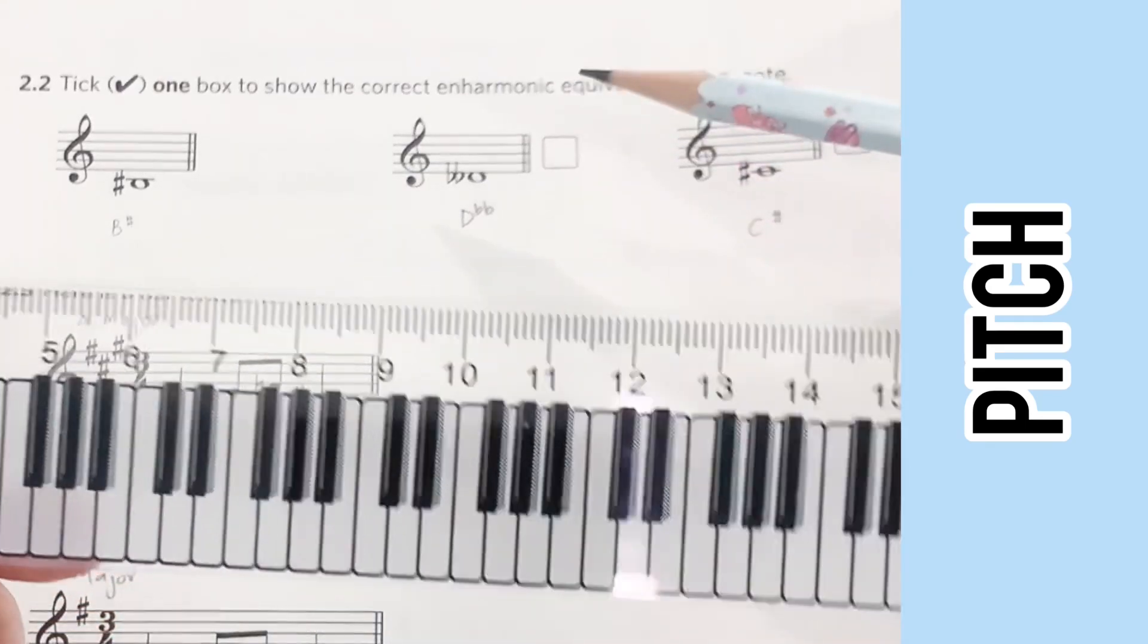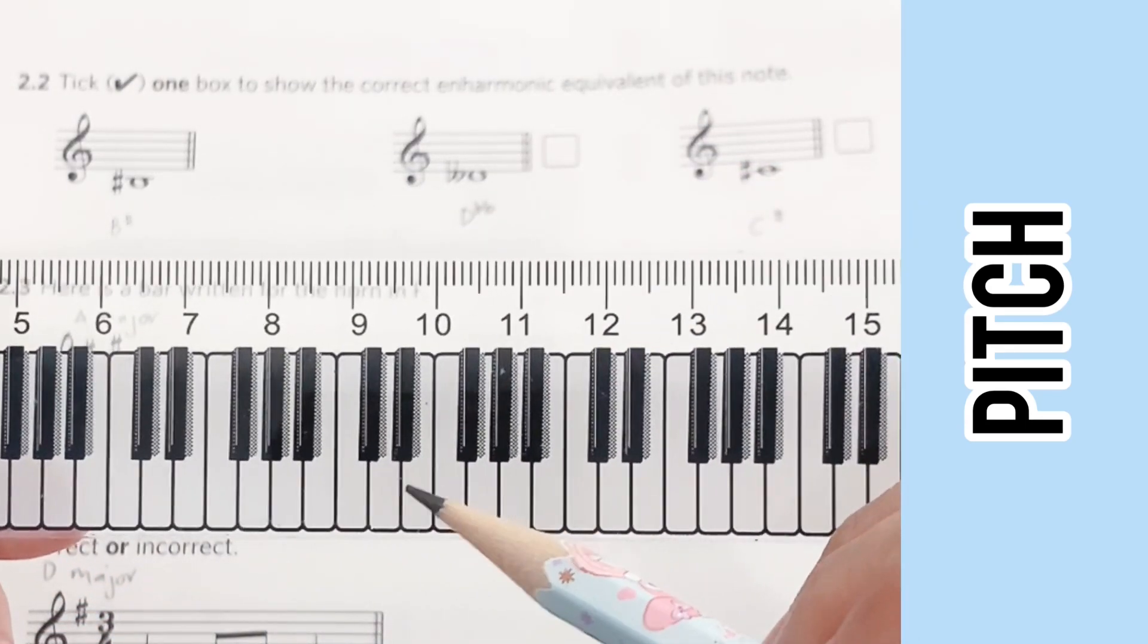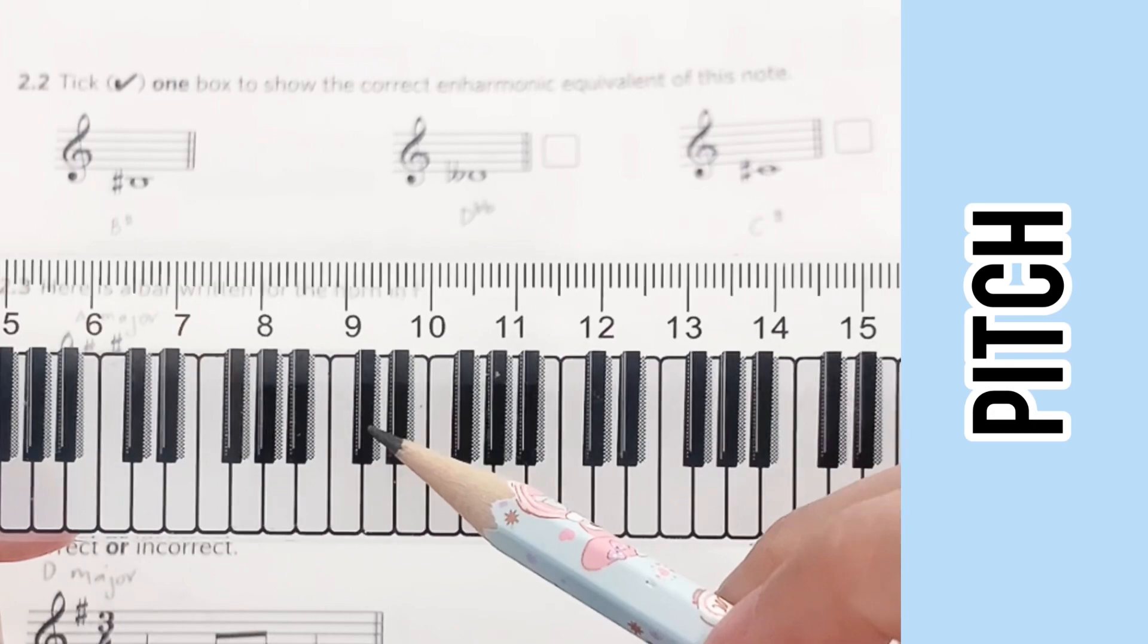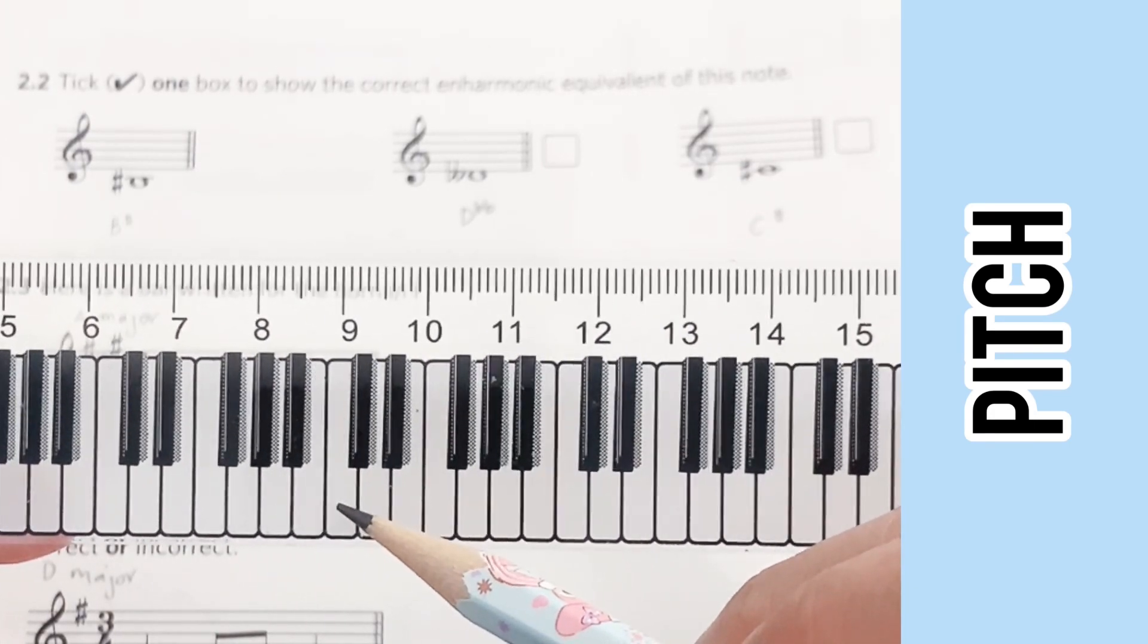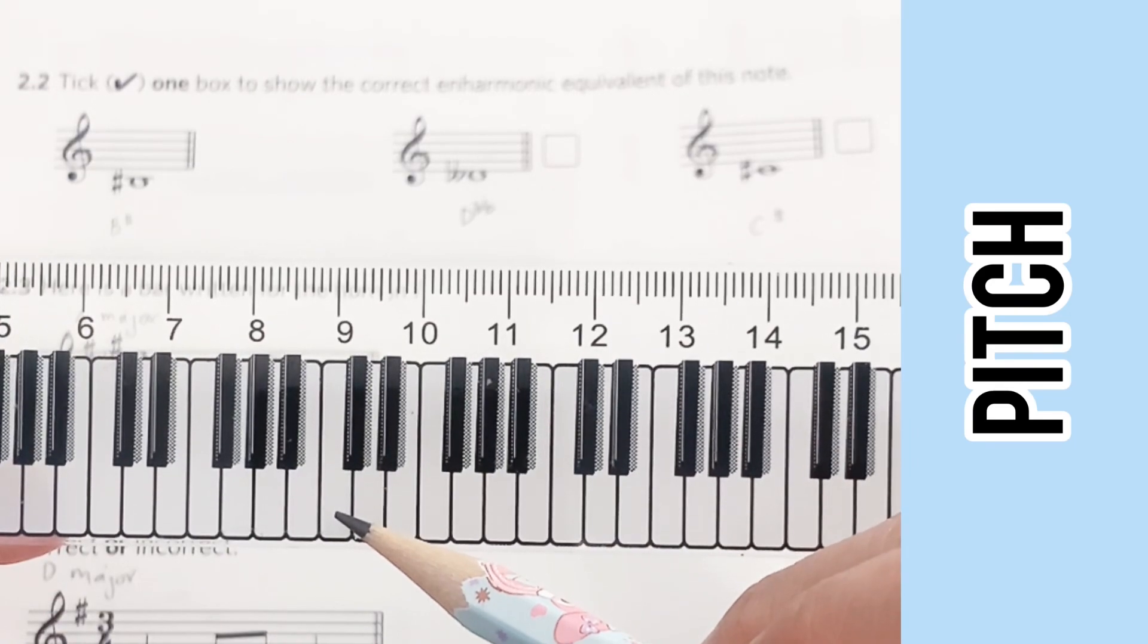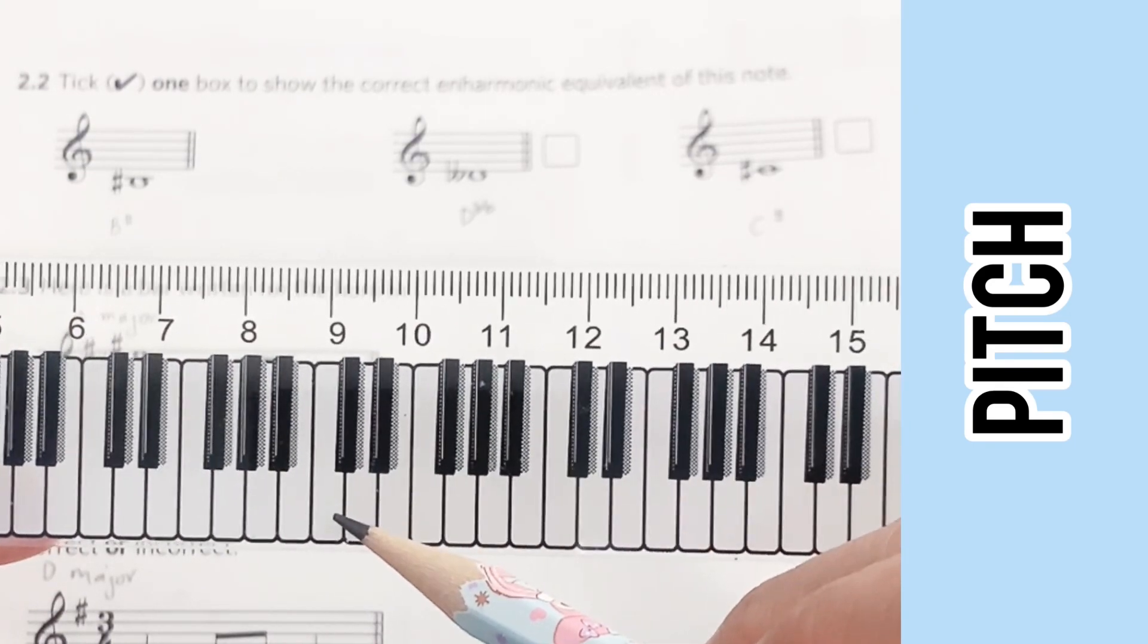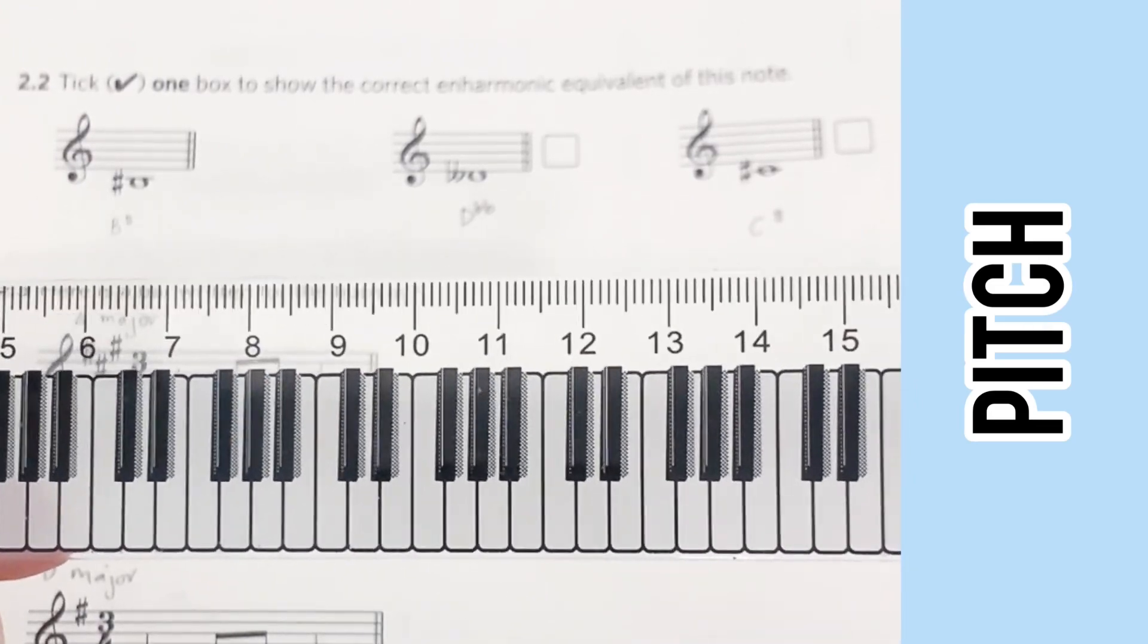There is D double flat—so D, D flat, D double flat—and it ends up on the same key as your B sharp. But anyway, we are still going to look at the other options given.